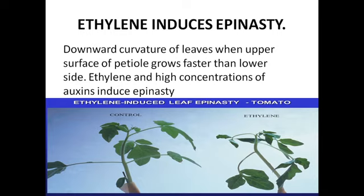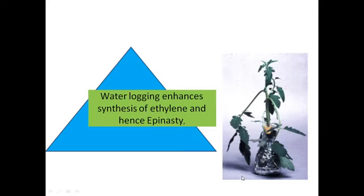Ethylene also induces epinasty, which is the downward curvature of leaves. In a normal plant, the lamina of the leaves faces upward, but when the leaves start drooping and curving downward, it is called epinasty. Ethylene and high concentrations of auxins together induce epinasty. This occurs specifically in water-logged plants — plants where flooding occurs.